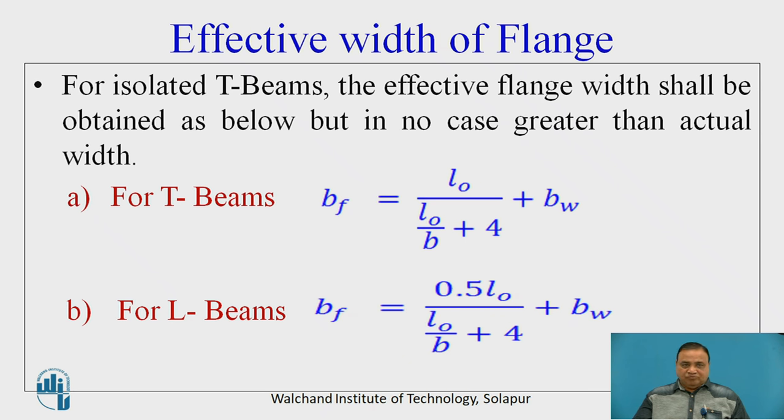For isolated T-beam, the effective flange width shall be obtained as below, but in no case greater than the actual width. For T-beam, Bf equals L0 divided by L0 plus 4 plus Bw. And for L-beam, it is Bf equals 0.5L0 divided by L0 by B plus 4 plus Bw.